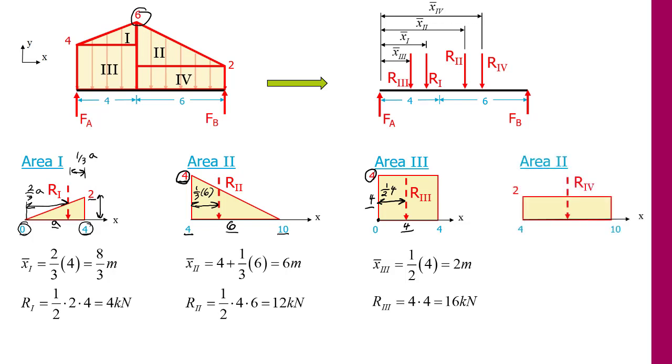And going just a little bit more quickly, for area 4, we now have starting at x equals 4 to x equals 10, so our base is 6 and our height is 2. So we get that our x-bar is 4 plus 1/2 the base, which is 7 meters, and our resultant is just the base times the height, which is 12 kilonewtons.